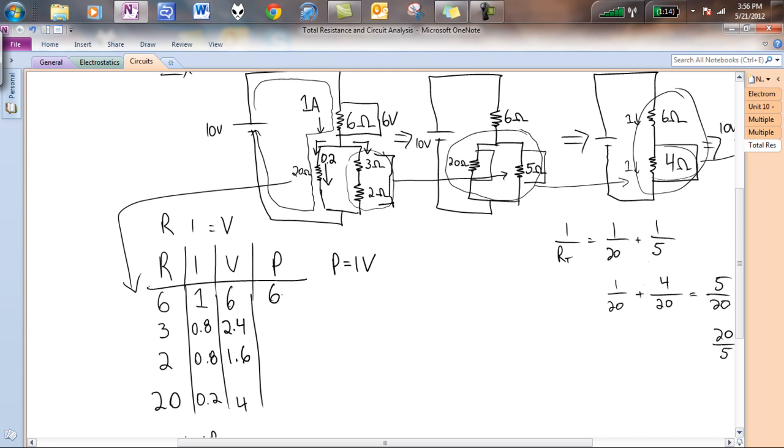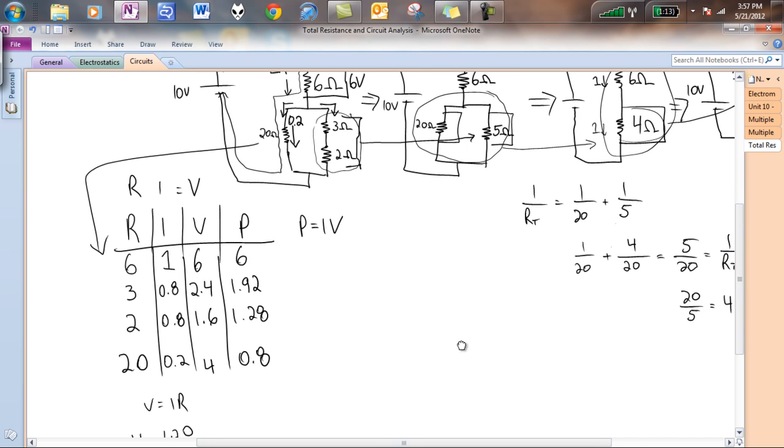We got 2.4 times 0.8. You can do that. That's 1.92. We got 0.8 times 1.6. This is going to be 1.28. Maybe they're not the nicest, neatest numbers. And 4 times 0.2 is going to be 0.8. And you will see this is our RIVP table. And the reason why I usually do powers for one last thing to note is we can actually get the total power, in this case, the total amount of energy per time that's being used here. And if you add all of these pieces up, you will see that we get a value of 10.